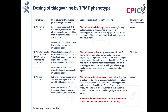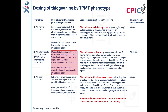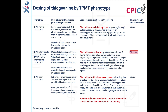These are the CPIC dosing recommendations for thioguanine by TPMT phenotype. Patients who are TPMT normal metabolizers will have lower concentrations of thioguanine nucleotide metabolites and are at a normal risk of thiopurine-related myelosuppression; these patients can be given the normal starting dose of thioguanine. This is a strong recommendation. Patients who are TPMT intermediate metabolizers or possible intermediate metabolizers will have moderate to high concentrations of thioguanine nucleotide metabolites and are at an increased risk of myelosuppression; these patients should be started at a reduced dose. This is a moderate recommendation.